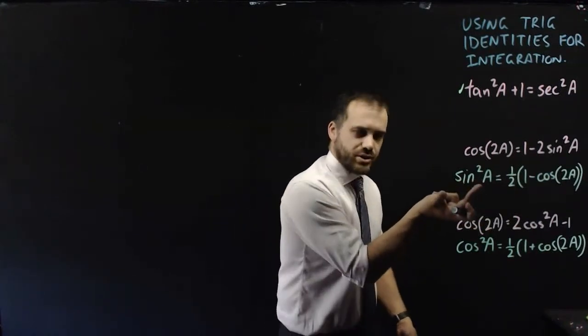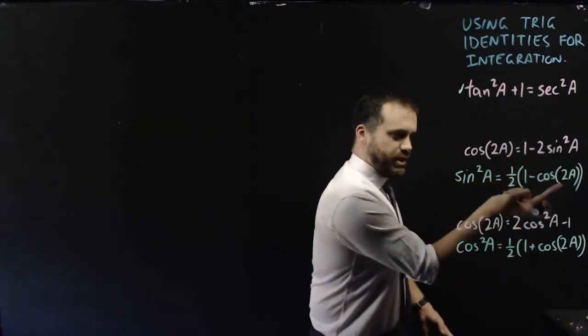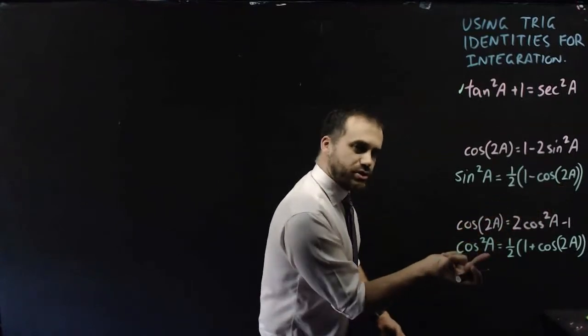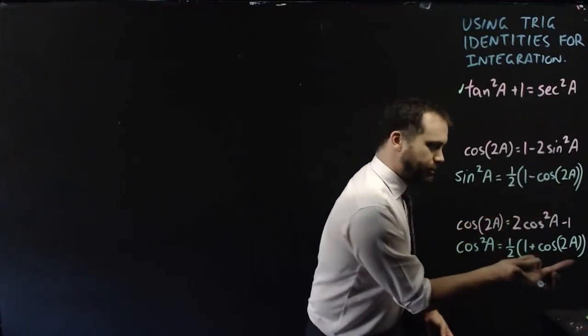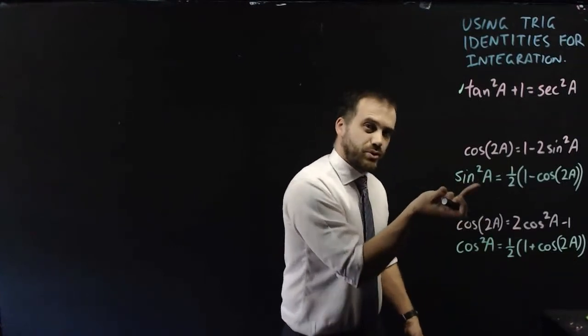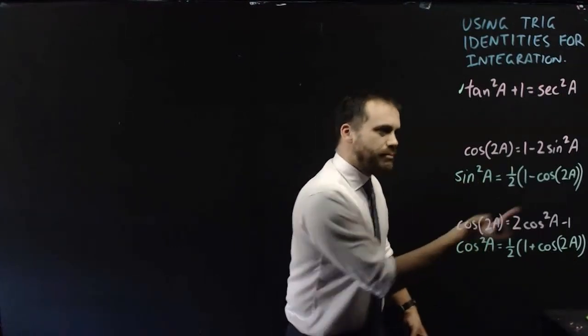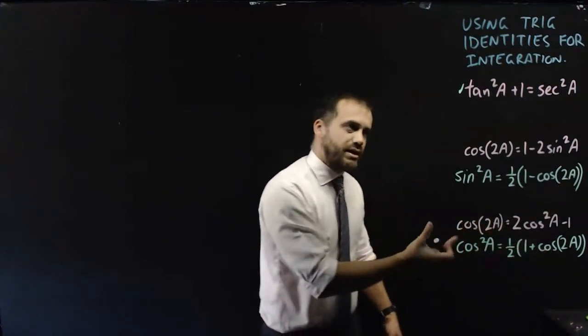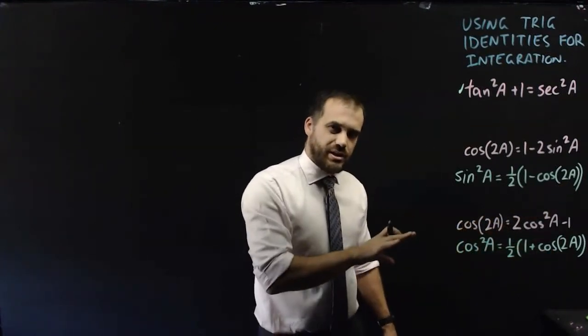What that allows us to do is if we see a sin²A in an integration, we can replace it with that. And if we see a cos²A in an integration, we can replace it with that. Because we don't know how to integrate sin squared or cos squared, but we can integrate those forms. That's the secret sauce here.